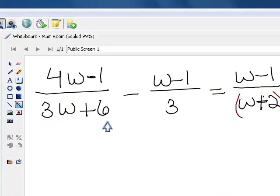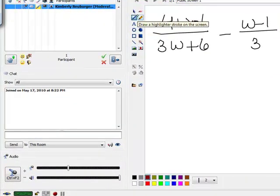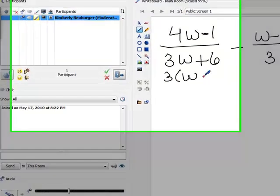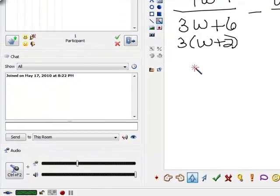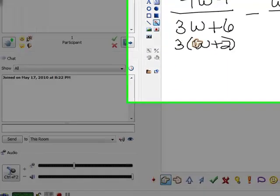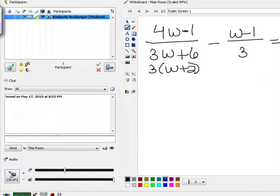However, this one here is not factored. We need to factor that to see what it turns into to see if there's anything else we need. And I notice that there's a 3 in common to both of them, so let's factor out the 3, and we get w plus 2. So notice that this particular expression has both the 3 and the w plus 2. And this one has a 3, and this one has a w plus 2. So the only things we need in order to be able to cancel all the denominators out is a 3 and a w plus 2. So that's what our least common denominator is.